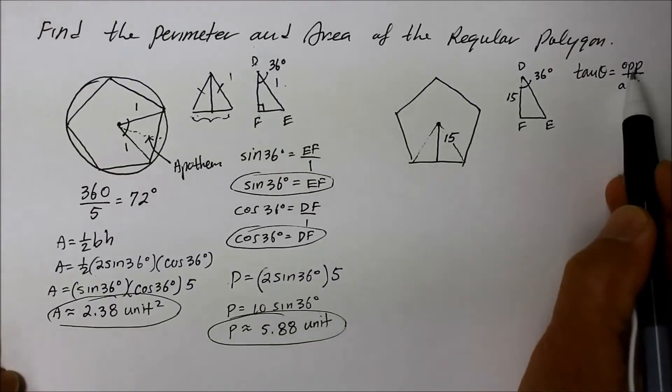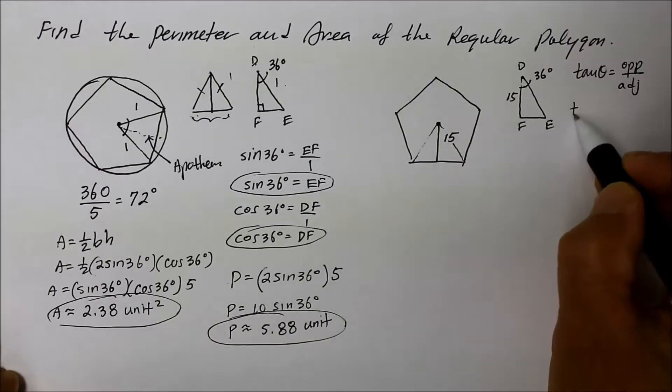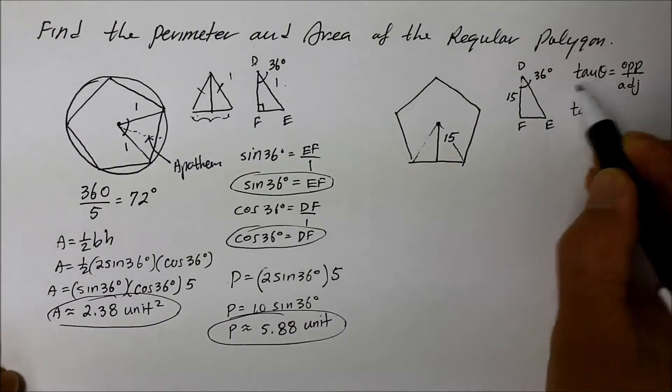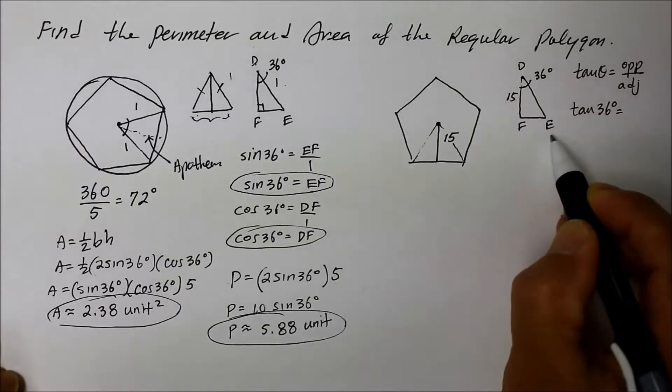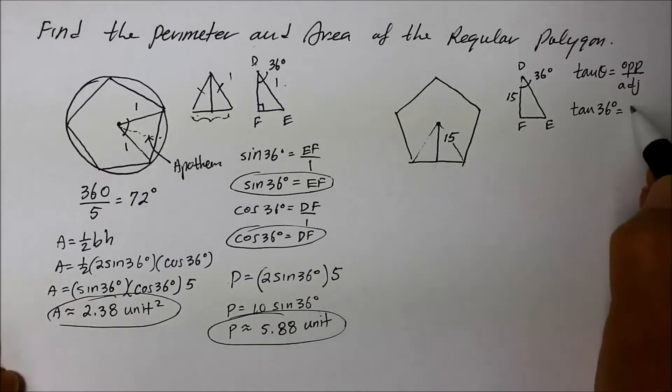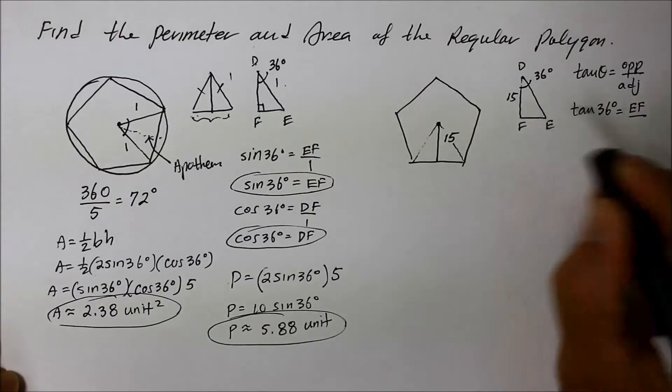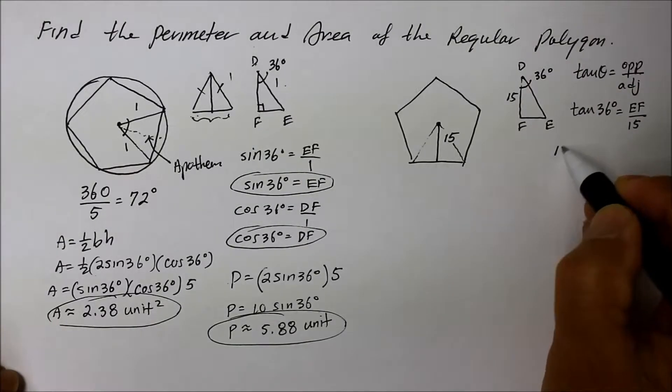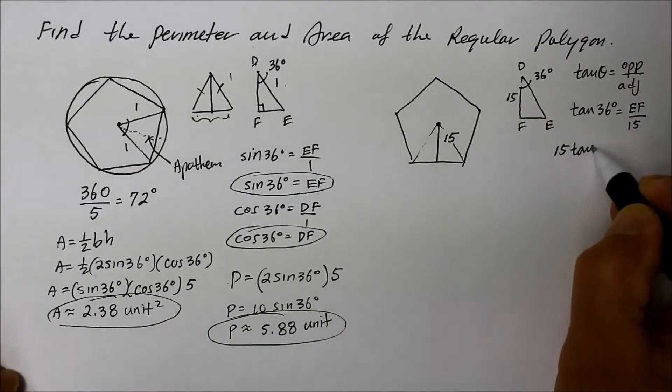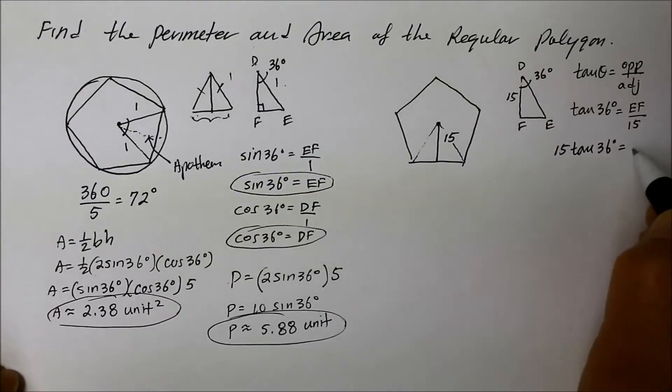So we need to look for the opposite. So in this case, when we say tangent of the reference point theta, which is 36 degrees, the opposite is the side indicated by the vertices EF, and the denominator adjacent becomes the 15. So if I try to solve for EF, I'm going to multiply the 15 to both sides of the equation. So in fact, what we have is 15 times the tangent of 36 degrees is going to give us that distance of EF.